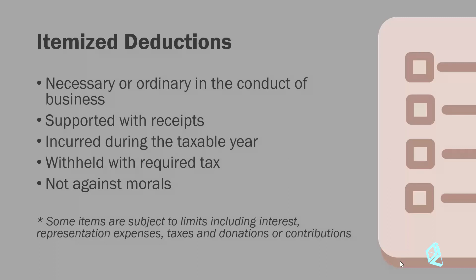Welcome back. In this video we'll tackle itemized and optional standard deductions. We talked about the formula for computing taxable income in the previous video, and we know that we reduce our gross sales and receipts by our cost of sales and other operating expenses. The first thing you need to know is that you have two options to reduce your gross sales and gross receipts.